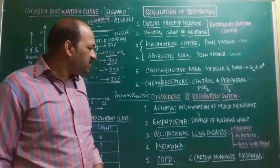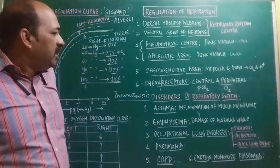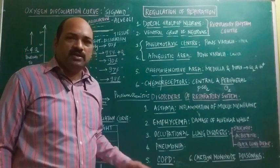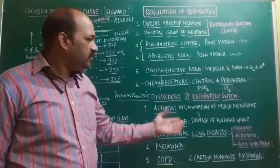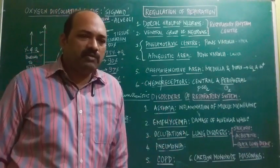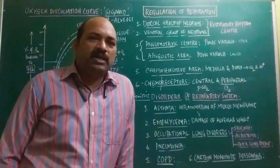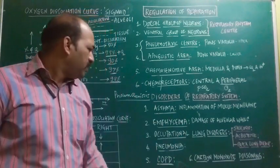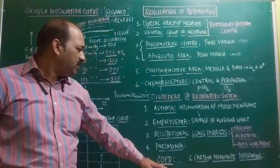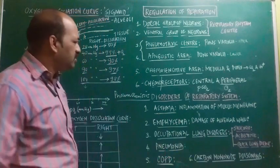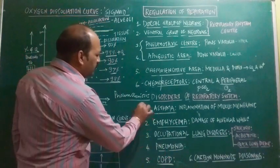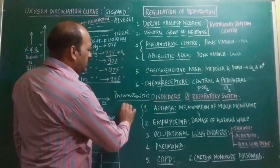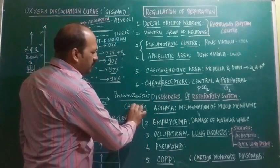The next one is emphysema. Emphysema is a disorder which occurs due to damage to the alveolar walls, and emphysema is a type of chronic obstructive pulmonary disease. Both asthma and emphysema are said to be chronic.